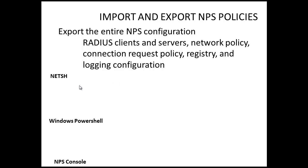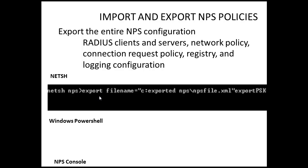Let's look at the command for NetSH. The command is: export filename equal the path — for example, a folder on the C drive called 'Exported NPS' — and 'NPS file' is the name we want to give to the XML file, because when we export that file it is exported in XML format. We have the parameter exportPSK equal yes, and as long as you are using NetSH on the command line to import and export, you have to use exportPSK, which is your pre-shared key.